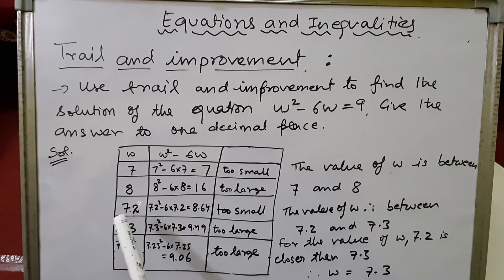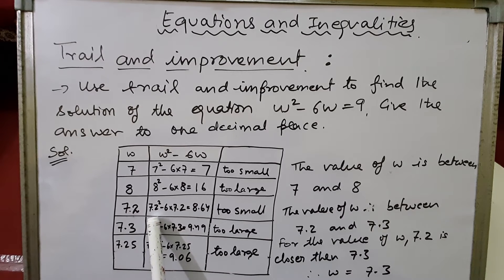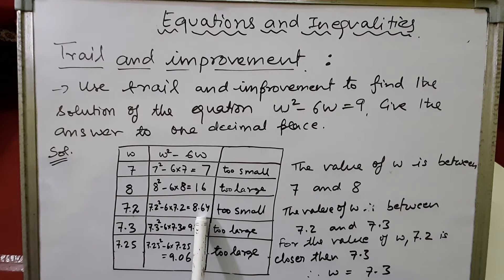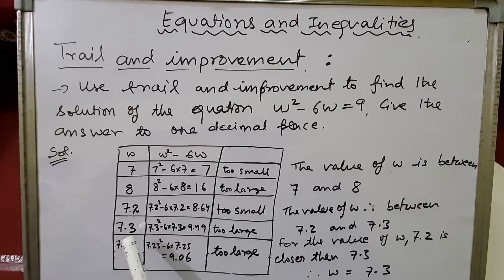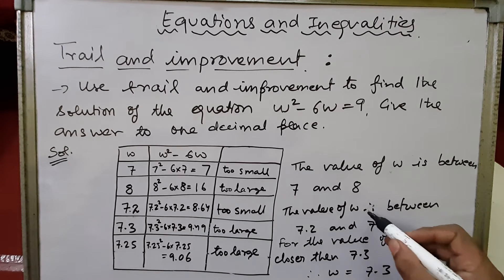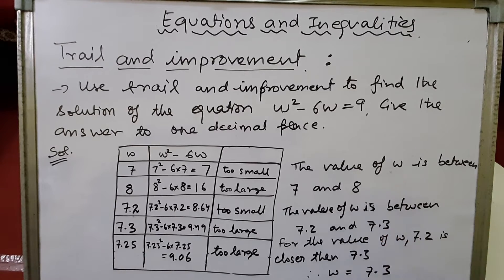So let's try a value closer to 7, say w = 7.2. We get 7.2² - 6×7.2 = 8.64 — we can use a calculator. Since 8.64 is smaller than 9, we write too small. When we try w = 7.3, we get 7.3² - 6×7.3 = 9.49, which is greater than 9, so too large.